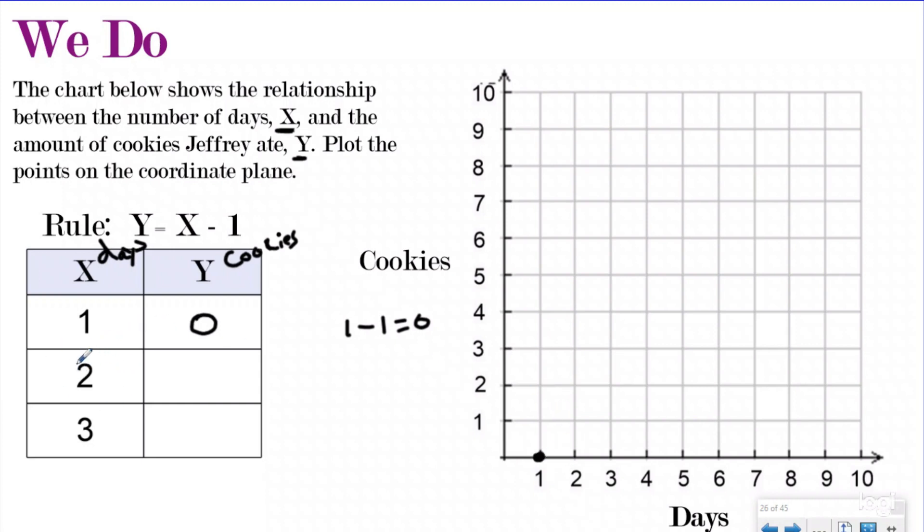If I keep following the same rule on the second day, X is two because it's a second day. Two minus one would be one. So on day two, Jeff ate one cookie. And then on the third day, three minus one would be two. And so on the third day, Jeff ate two cookies.